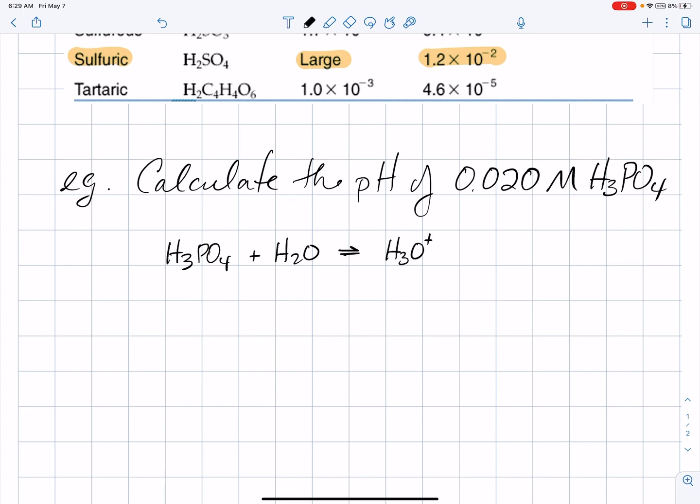And then, after losing a hydrogen ion, the phosphoric acid becomes dihydrogen phosphate, H2PO4 minus, one minus would be its charge, having lost a positive.